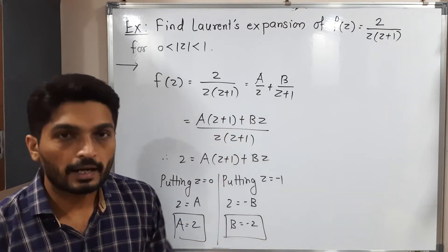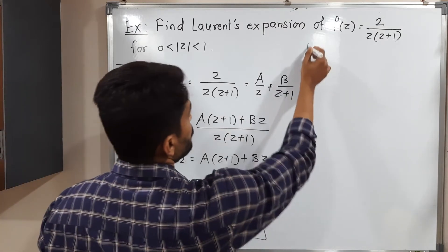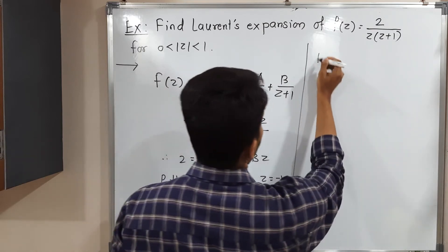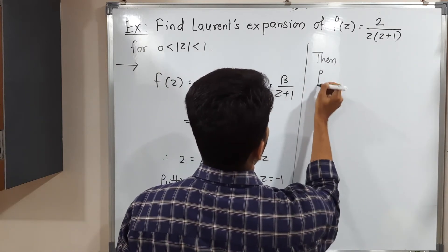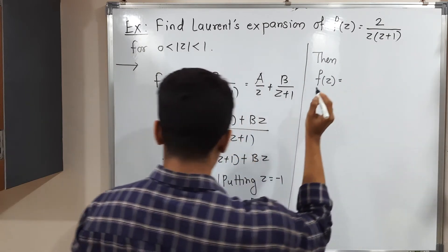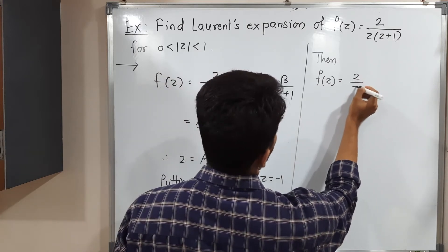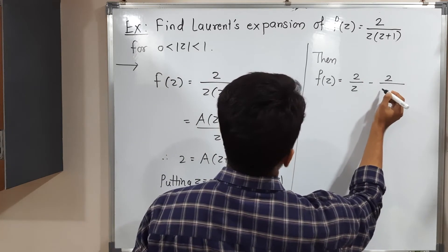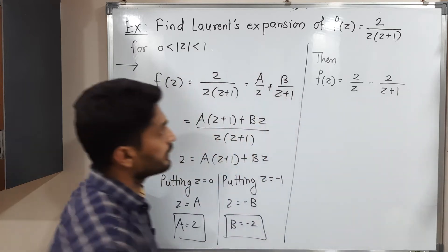Let us put it here and make them separate. Then f(z) equals, A is 2, so this is 2 by z. And B is minus 2, minus 2 upon z plus 1.